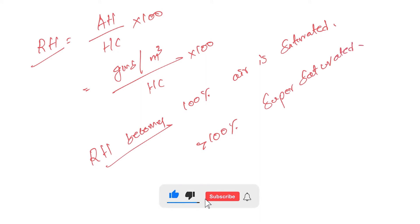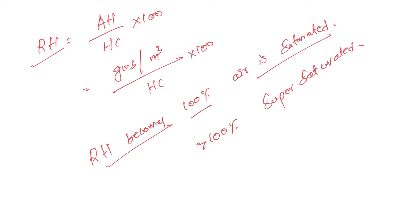If relative humidity becomes more than 100%, the air is said to be super-saturated. When the air gets super-saturated, it can no longer hold the moisture, and that results in rainfall. When the air gets super-saturated, it yields that excess moisture in the form of rainfall.